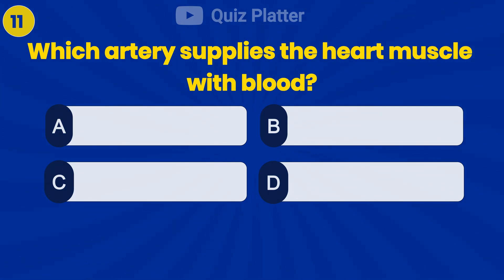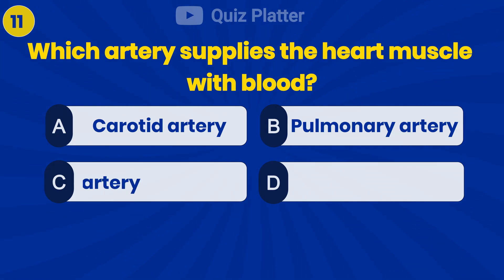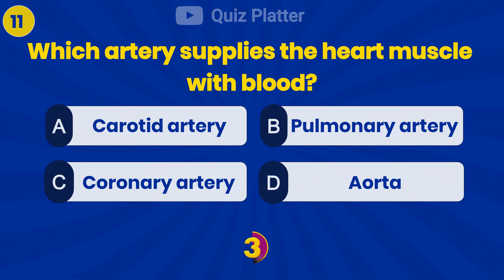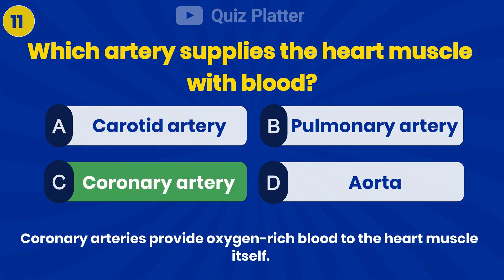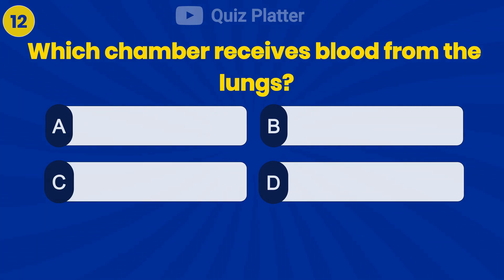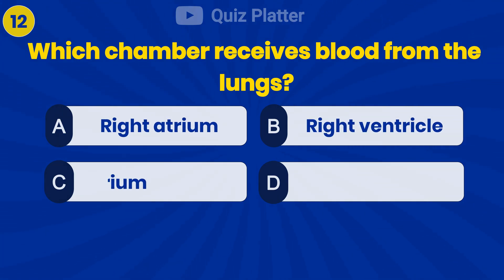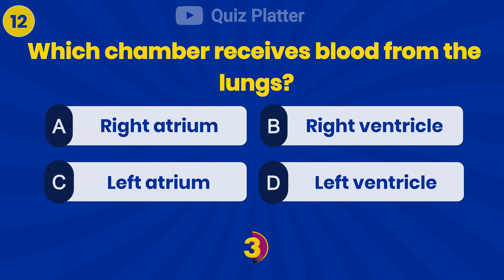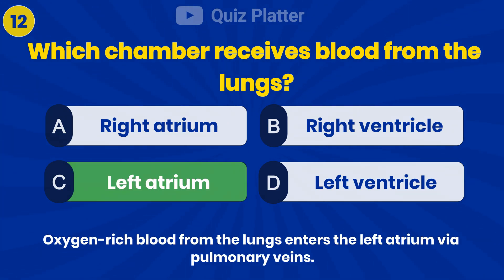Which artery supplies the heart muscle with blood? Answer C: Coronary artery. Which chamber receives blood from the lungs? Answer C: Left atrium.